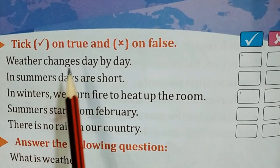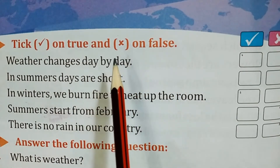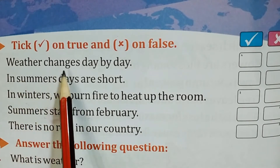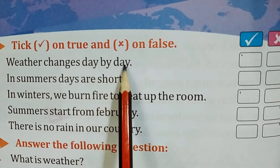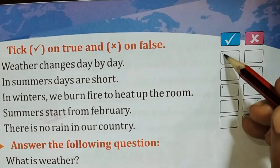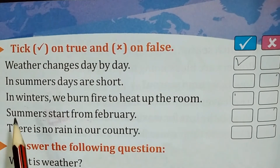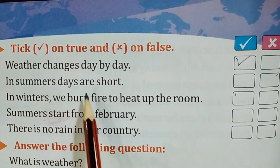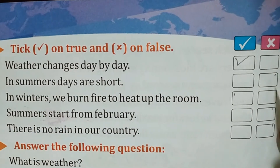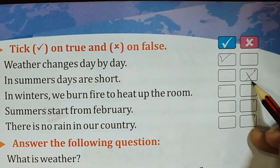Next: tick on true and cross on false. First: weather changes day by day — یہ درست ہے — this is correct, we put a tick. In summer, days are short — گرمی میں دن چھوٹے ہوتے ہیں — this is wrong, we put a cross.